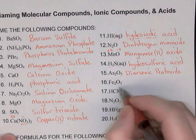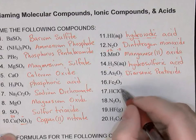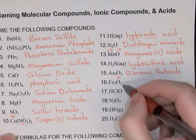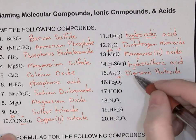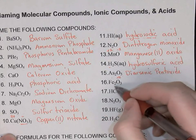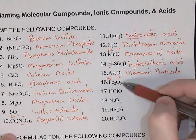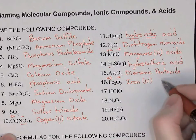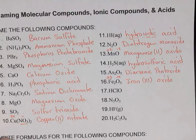Fe2O3: iron and oxygen — that's a metal bonded to a nonmetal, so this is an ionic compound. Iron is a type 2 cation with more than one charge, so we need a Roman numeral. The oxygens are -2 each and there are three of them: 3 × -2 = -6 charge in the oxygens, so there must be +6 charge in the iron to cancel. That +6 is divided over two iron atoms, so each iron must be +3. Double check: 2 × 3 = 6, and 3 × -2 = -6. So the name is iron(III) oxide. We need the Roman numeral because iron can be either +3 or +2.